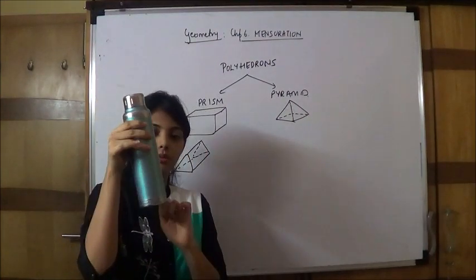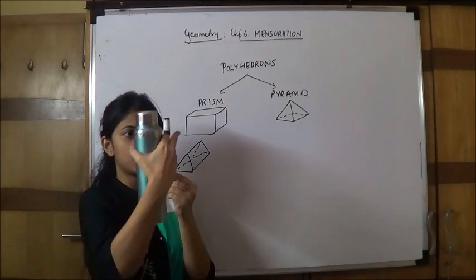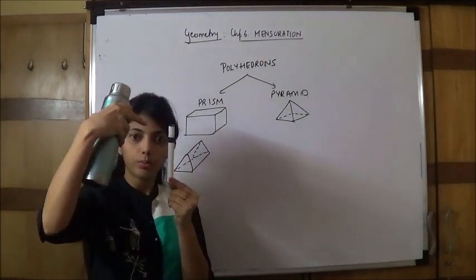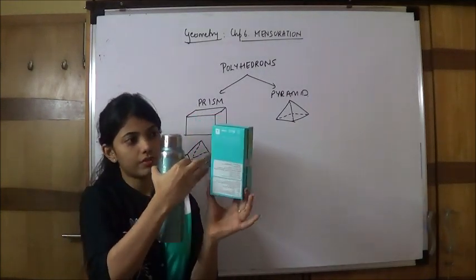This cannot be termed as a polyhedron because this is a curved part. Like for this marker as well, this is a curved part, so this cannot be a polyhedron. This is a polyhedron because all the surfaces are straight.